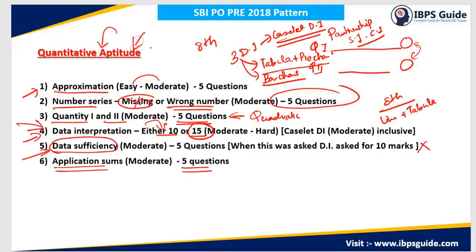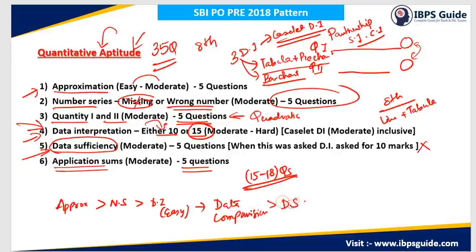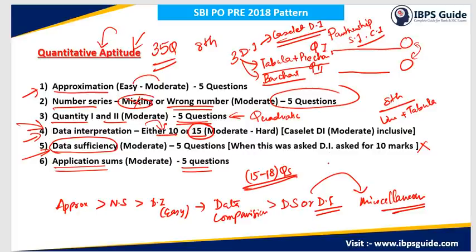Regarding safe attempts in quantitative aptitude — out of 35 questions, if you are able to solve 15 to 18 questions, you are on the safer side. The order of attempt should be: first approximation, followed by number series, then attempt the easy DI set, then data comparison — that is quadratic equations and quantity 1 vs quantity 2 — then data sufficiency or the remaining DI sets, and finally the miscellaneous section if time permits. One important suggestion: in DI sets, do not attempt all five questions — attempt only the easy ones and skip the hard ones, as hard questions will waste your time.